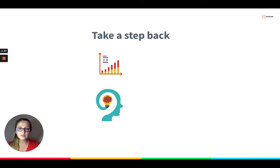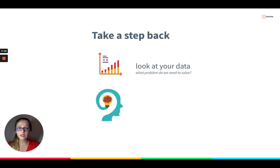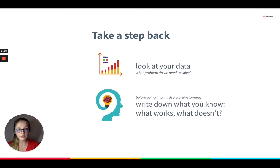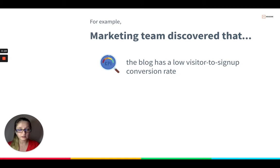So let's take a step back. The first thing you need to do before writing your OKRs is look at your data. What does it communicate to you? Can you see any significant or concerning changes over the past few months or quarters? Before discussing solutions to implement this quarter, make sure to write down what you know from historic experience — what works and what doesn't — because you wouldn't want to recycle older projects that didn't work.